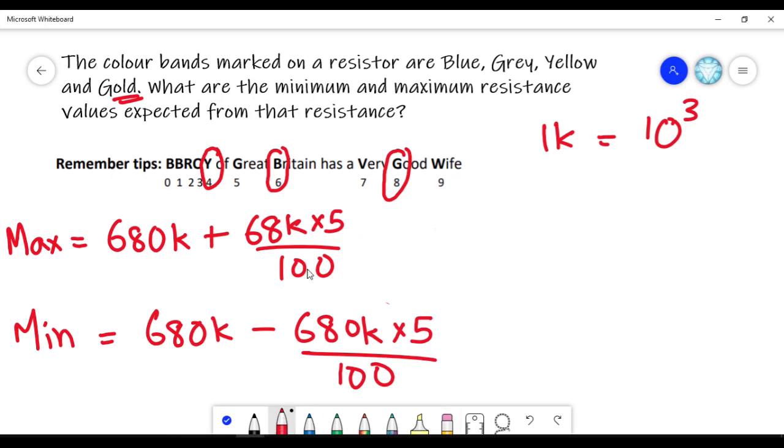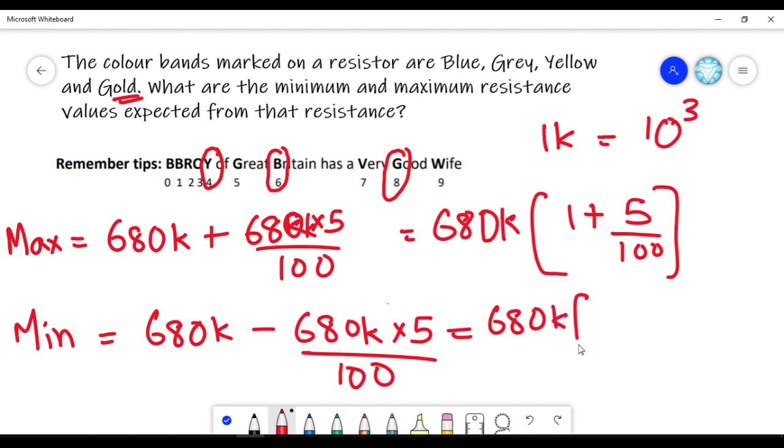680k is equal to 680k times 1 plus 5 by 100. And for minimum, 680k times 1 minus 5 by 100.